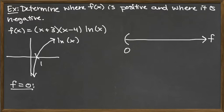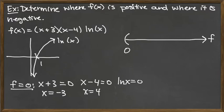We find out where f is equal to 0 by setting each factor equal to 0 and solving. We've got x + 3 = 0, giving us x = -3. We've got x - 4 = 0, giving us x = 4. And we've got ln(x) = 0, giving us x = 1.